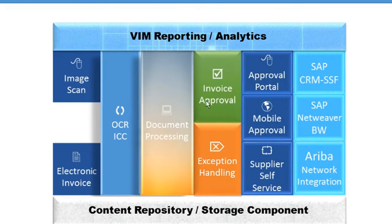For every portion of invoice approval or exception, there is an approval portal, mobile approval, and supplier self-service. Supplier self-service allows suppliers to query the status of their invoices — when they will get paid and similar inquiries. Suppliers can perform invoice inquiries directly from the supplier self-service portal.